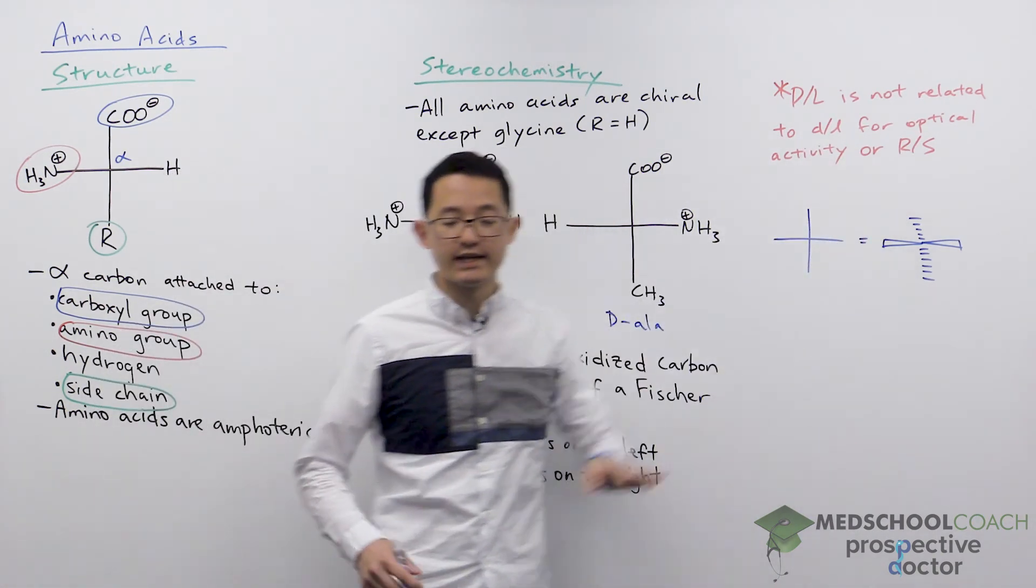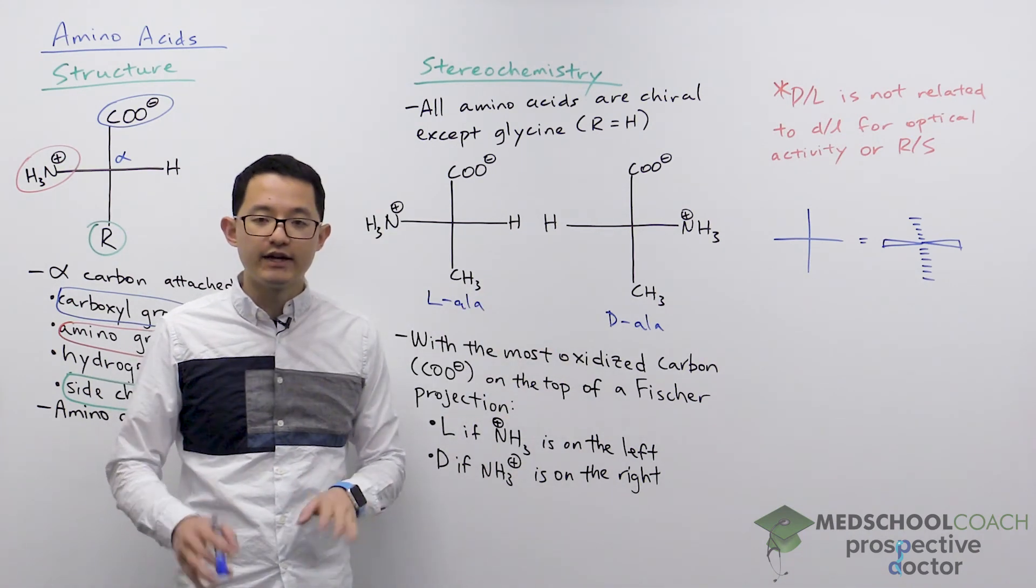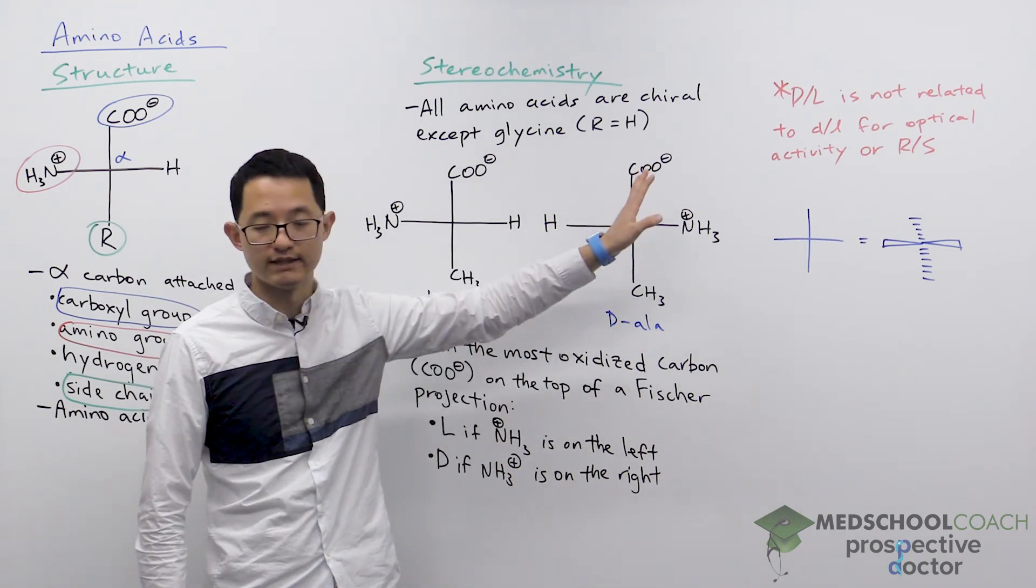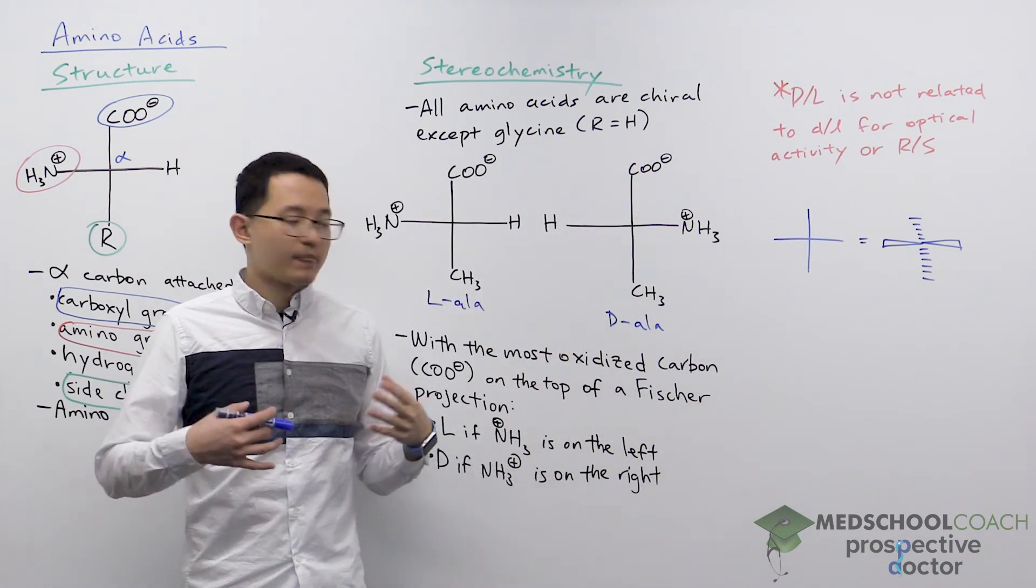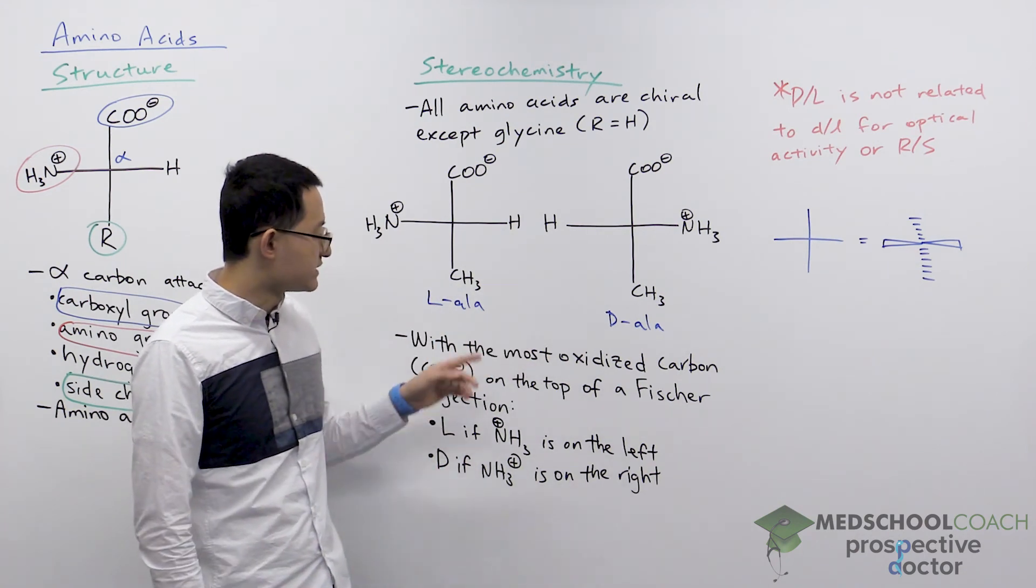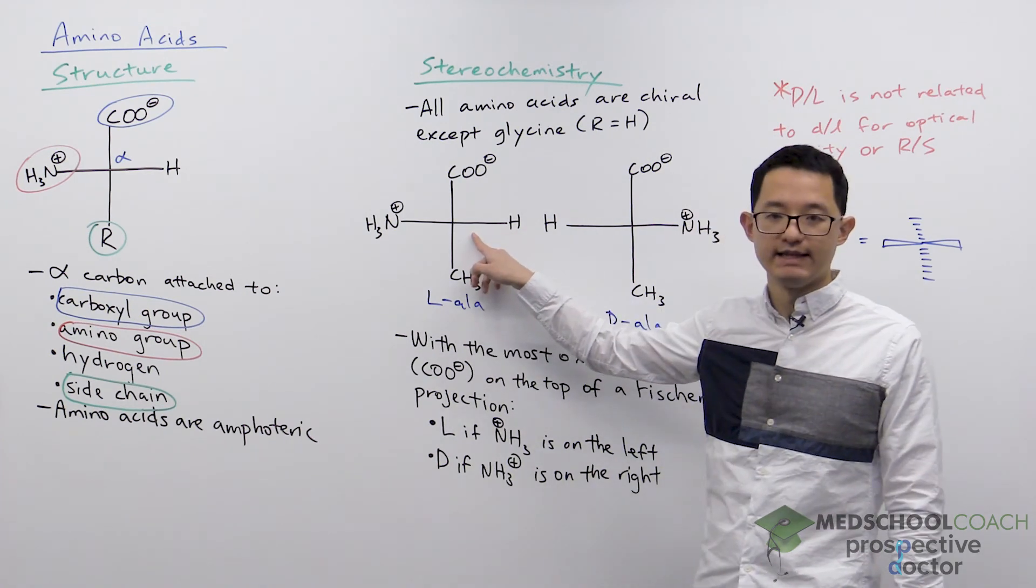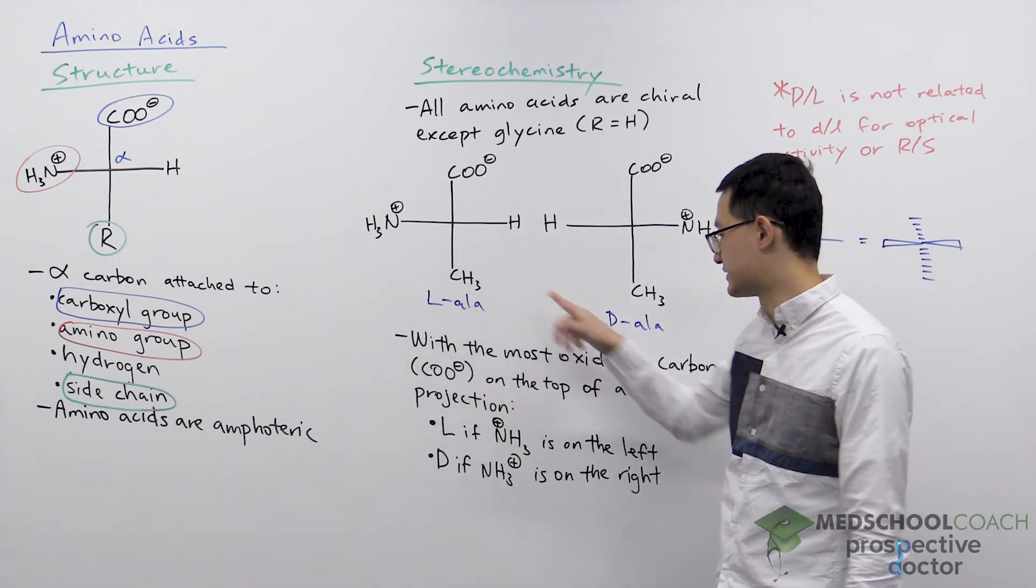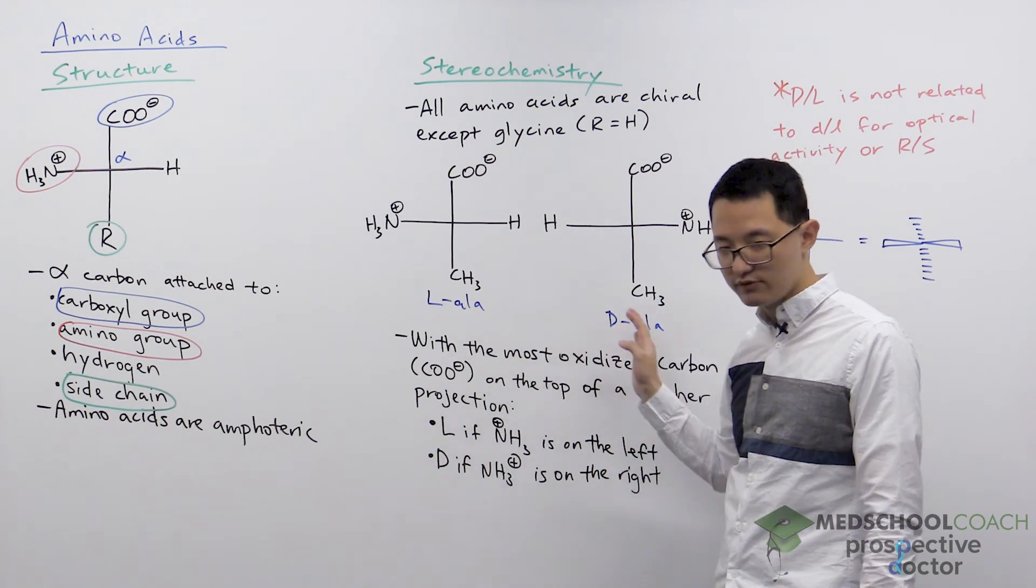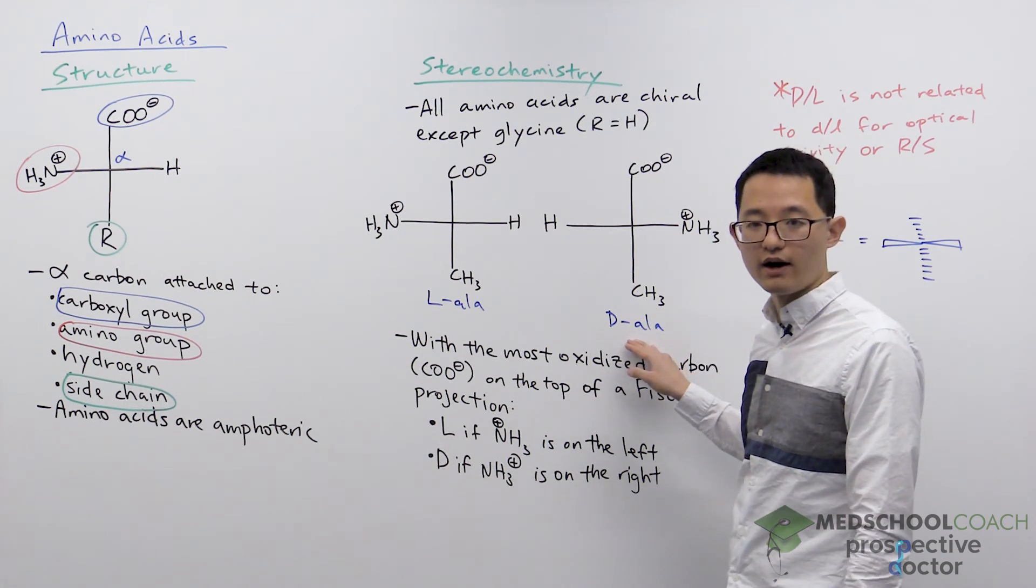Now R and S can also be determined looking at the structure but again they are unrelated to D and L. Essentially none of these are related together. And the reason why is because if you look at the amino acids, this L amino acid has an S configuration and this D amino acid has an R configuration. This is true for a number of amino acids. L is S and D is R.